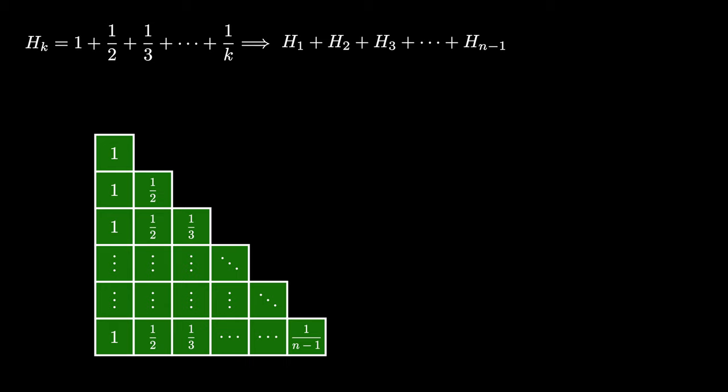Now consider a triangular array of boxes with n rows. Take the number n and split it into n copies of 1. Then equally distribute 1 into each column using fractions, so that column j contains all entries of fractions 1 over j as pictured.